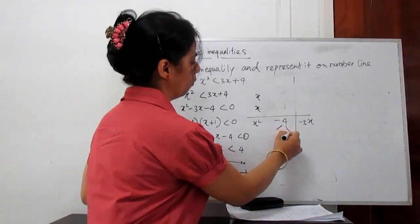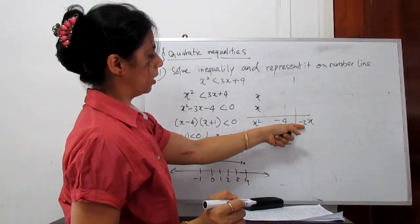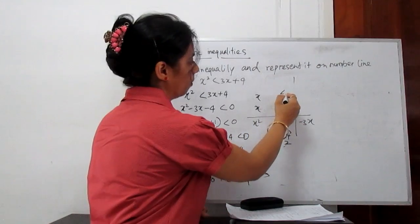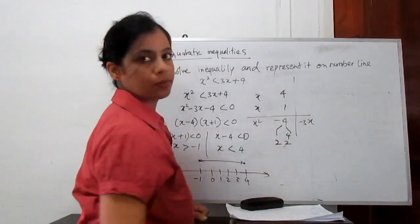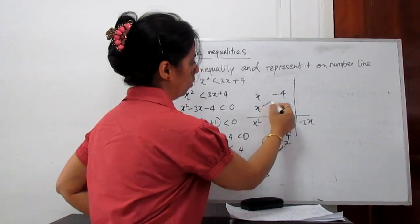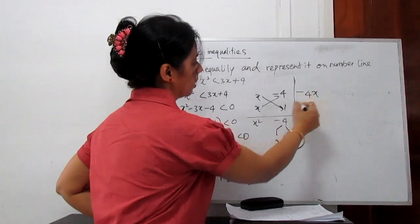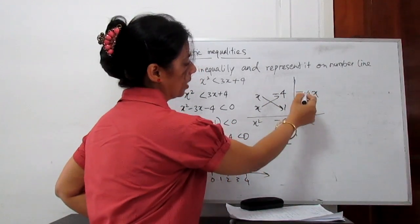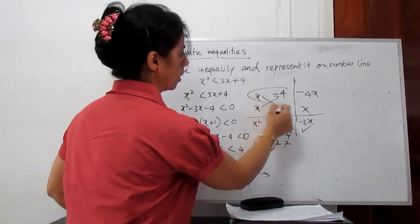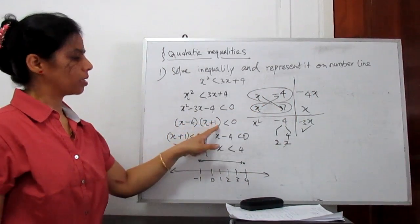So x squared means x times x. Factors of 4 are 1 and 4, or 2 and 2. We need a middle term of 3, so 4 minus 1 is 3. We take one place as 1 and another as 4. For the negative 3, we take 4 as negative — so minus 4x plus x gives minus 3x. So our factors of the given equation are x minus 4 and x plus 1.